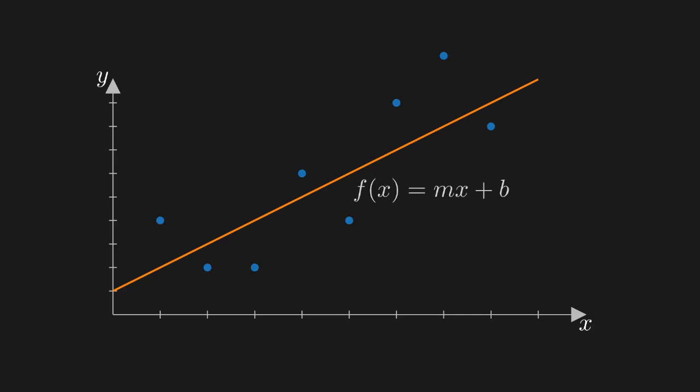We know that a line can be expressed in the form y equals mx plus b, but how would we find the values of m and b that best represent our data set? For that matter, what does it even mean to best represent a data set?